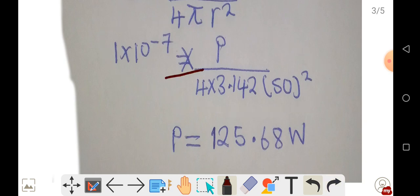You do a cross multiplication. The power would be 125.68 watts. This is the power that was required. That's question A.